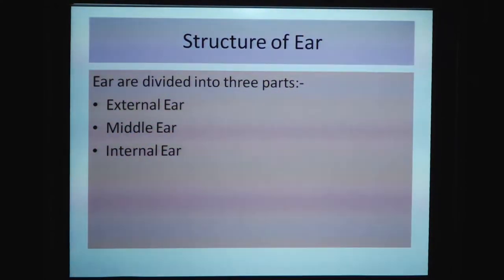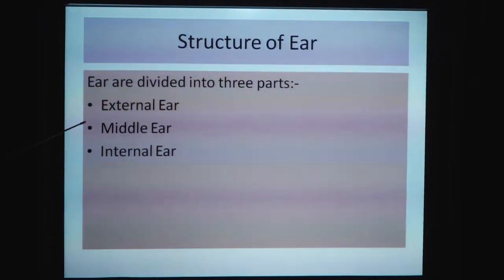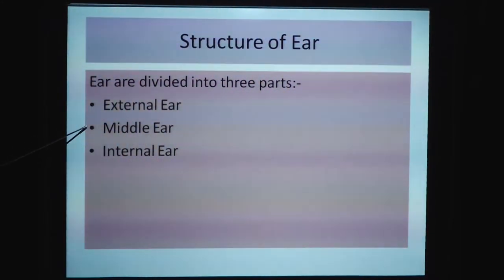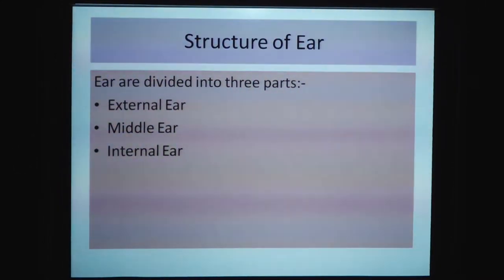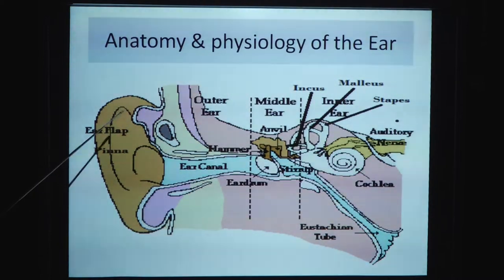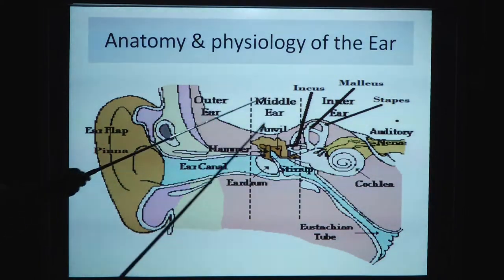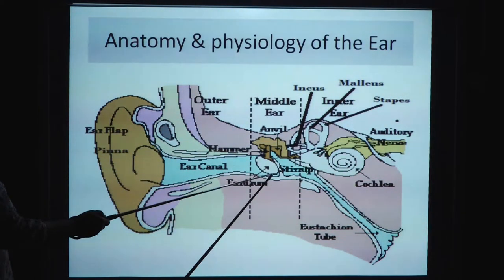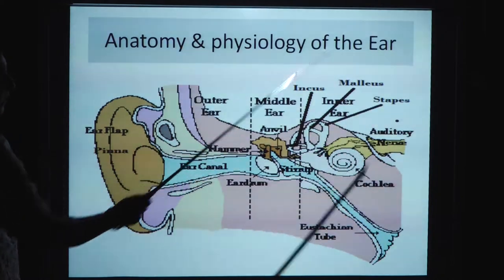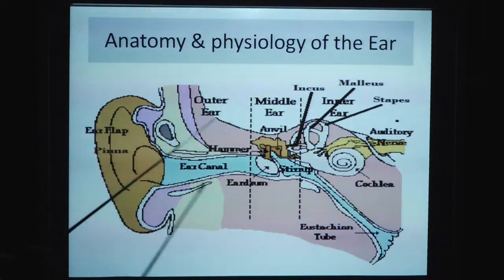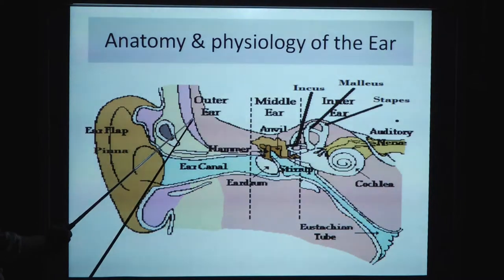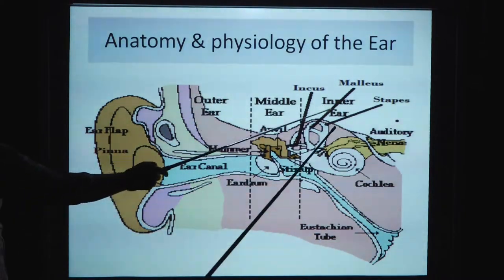दोस्तों, हमारा जो ear होता है वो तीन पार्ट में divide होता है। पहला हमारा होता है external ear, दूसरा हमारा होता है middle ear, और तीसरा हमारा होता है internal ear। जैसा आप इस picture में देख रहे हैं — यहाँ तक का यह हमारा outer ear होता है, यह बीच वाला middle ear होता है, और यह our inner ear है। So our ear has three parts: the outer ear, the middle ear, and the inner ear.